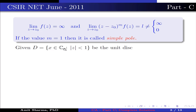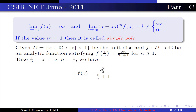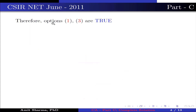Given D = {z ∈ C : |z| < 1} and f analytic satisfying f(1/n) = 2n/(3n+1) for n ≥ 1. Take 1/n = z, so n = 1/z. We have f(z) = (2/z) / (3/z + 1), which simplifies to 2/(z + 3). This implies f(0) = 2/3 and f(3) = 1/3. Therefore options 1 and 3 are true and option 4 is false.